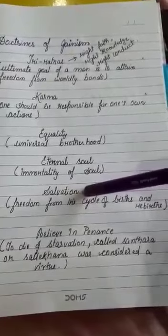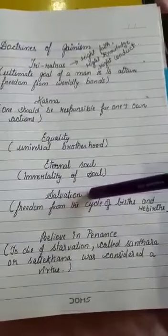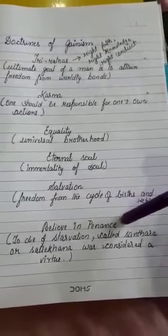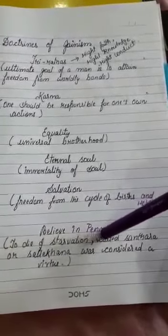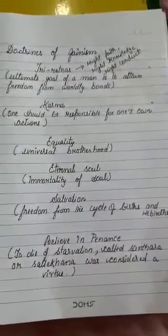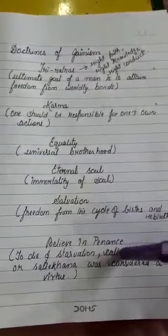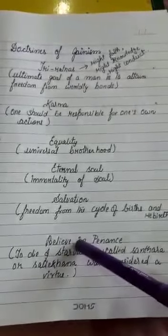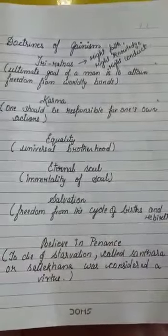Like the Hindus, Jains believe in Moksha, or freedom from the cycle of birth and rebirth. Jainism also promotes belief in penance — dying of starvation, called Santara, was considered a virtue. Jainism laid so much stress on severe penance that only a few people could lead such an austere life.